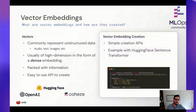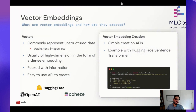First, talking about what vector embeddings are — mostly since not everybody knows what a vector database is or even what goes inside them. Vectors commonly represent unstructured data: audio, text, or images. They represent these in a highly dimensional embedding. Essentially, it's a list of numbers where each of those numbers represents some piece of information.